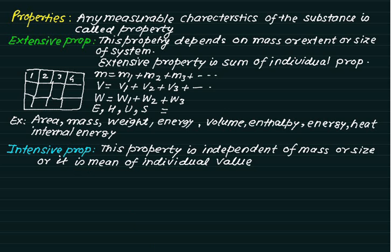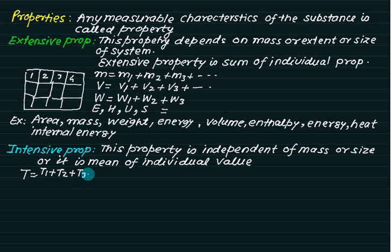Intensive property is independent of mass or size; it is a mean of individual values. For example, if a large room is divided into a number of compartments, the temperature may vary slightly — T1, T2, T3. If we want to state the temperature of the room, we do not add the temperatures. Rather, the average temperature equals T1 plus T2 plus T3 plus all sample points, divided by n, the number of data points. This average is called the intensive property. Temperature, viscosity, and thermal conductivity are all examples.